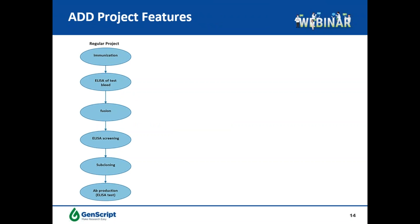Before going into the characterization assays, I want to highlight the features of antibody drug discovery projects. On the left side is the general workflow for a regular monoclonal antibody project aiming to identify an ELISA-application antibody, with a straightforward workflow from immunization to ELISA testing of test bleeds, selecting animals for fusion with ELISA screening. Based on ELISA screening, subcloning is performed to obtain stable monoclones, and the last step is ELISA QC of purified antibodies.